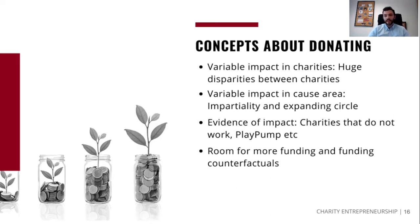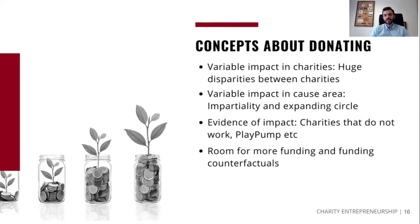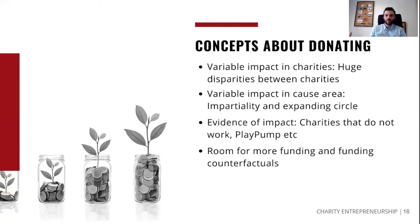Another concept is the idea of room for more funding. A common idea is that if you donate to a charity, they'll put the money towards something similar to what they've done in the past. But maybe a charity did very effective, evidence-based, cost-effective work, yet the low-hanging fruit is taken care of. For example, if a charity is working on vaccinations, they'll vaccinate the most important population first, then spread farther — meaning a charity's impact might not be the same throughout its entire life. Some charities might be brilliant at one million dollars a year but wouldn't achieve ten times the impact at ten million dollars a year.